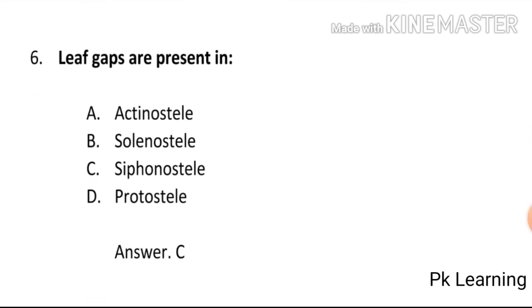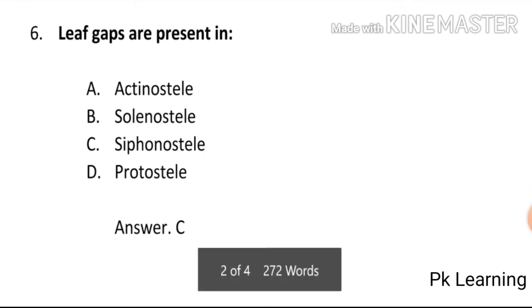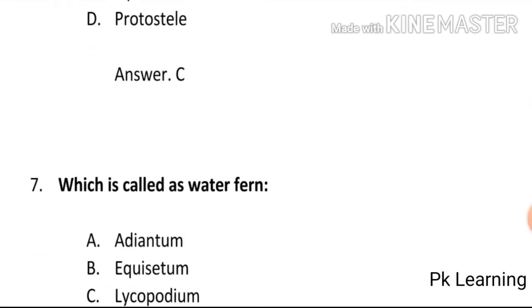Leaf gaps are present in: A) Actinostele, B) Solenostele, C) Siphonostele, D) Protostele. The answer is C, Siphonostele. Leaf gaps are present in Siphonostele. C is the correct option.